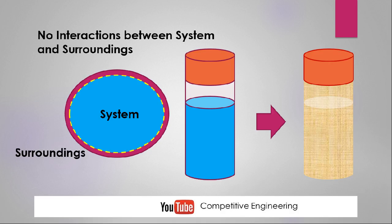I hope the concept of different types of systems — open system, closed system, and isolated system — is now clear. This is the end of the video. The next video covers control volume and control surface.